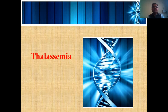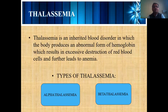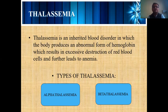Now let's discuss Thalassemia. As I mentioned, Thalassemia is a disorder in which normal blood cell synthesis is not carried out. Thalassemia is a disease you acquire by inheritance — it is transferred from parents to their children, from one generation to another generation.